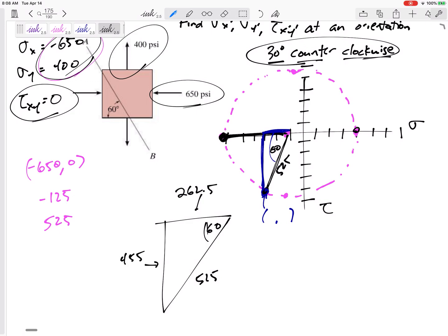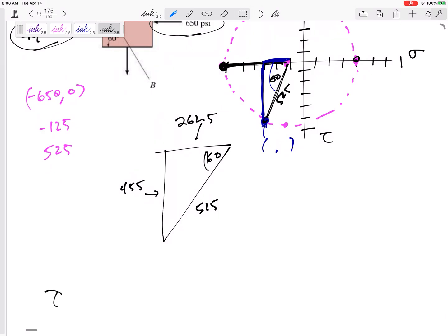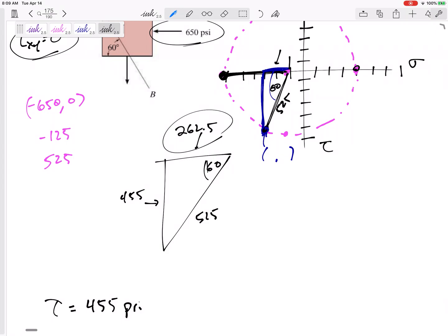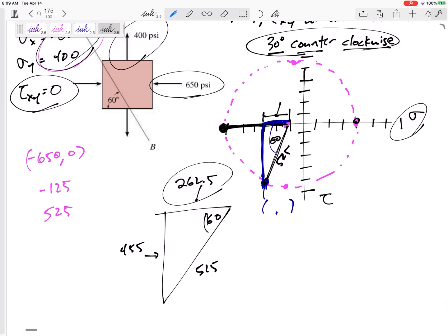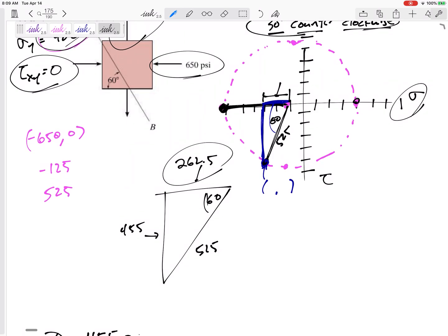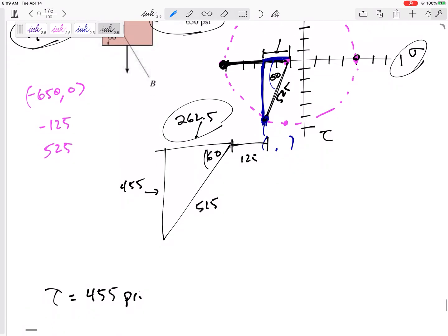So this triangle: 525, 60 degrees. This would be 525 cosine 60, 262.5. This would be 525 sine 60, 455. So yes, my tau is 455. All the units were psi. All right, but my sigma is not 262. 262 is the base of that, but where is it on these axes? It is negative 125 minus 262.5. This would be negative 387.5 psi.